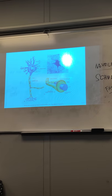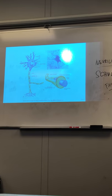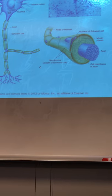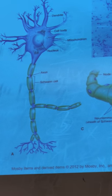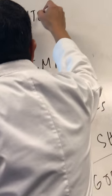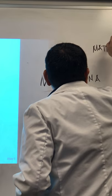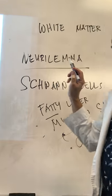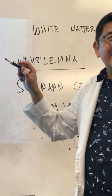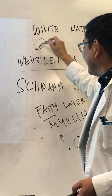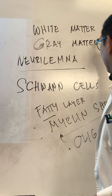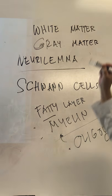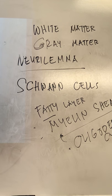Now some of these axons will not have the myelin sheath. A collection of axons that have myelin sheath will form what is known as the white matter of the brain. The opposite is gray matter — there's no black matter. The white matter is made up of axons that are myelinated, that have a myelin sheath, so they look white when you slice the brain.